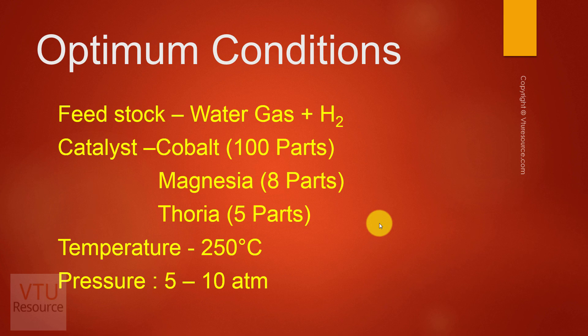The synthesis gas is fed into the converter which contains catalyst: Cobalt 100 parts, Magnesia 8 parts, and Thoria 5 parts, at 250 degrees Celsius. In this chamber, hydrogenation of synthesis gas occurs and it gets converted to alkanes.